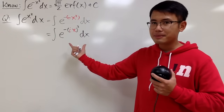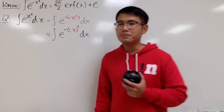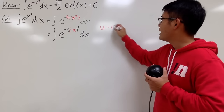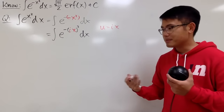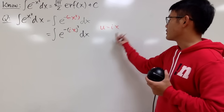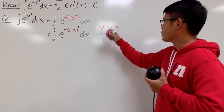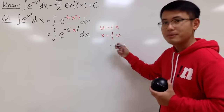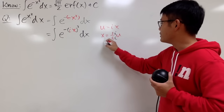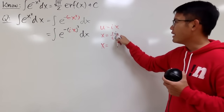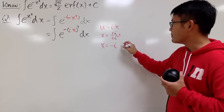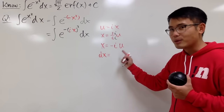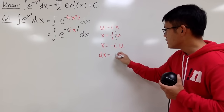So this integral is now in that standard form, and we can do a little u-substitution. Let u equal i times x, treating i as a constant multiple. Solving for x: x equals 1 over i times u, and multiplying top and bottom by i gives x equals negative i times u. Differentiating both sides: dx equals negative i du.